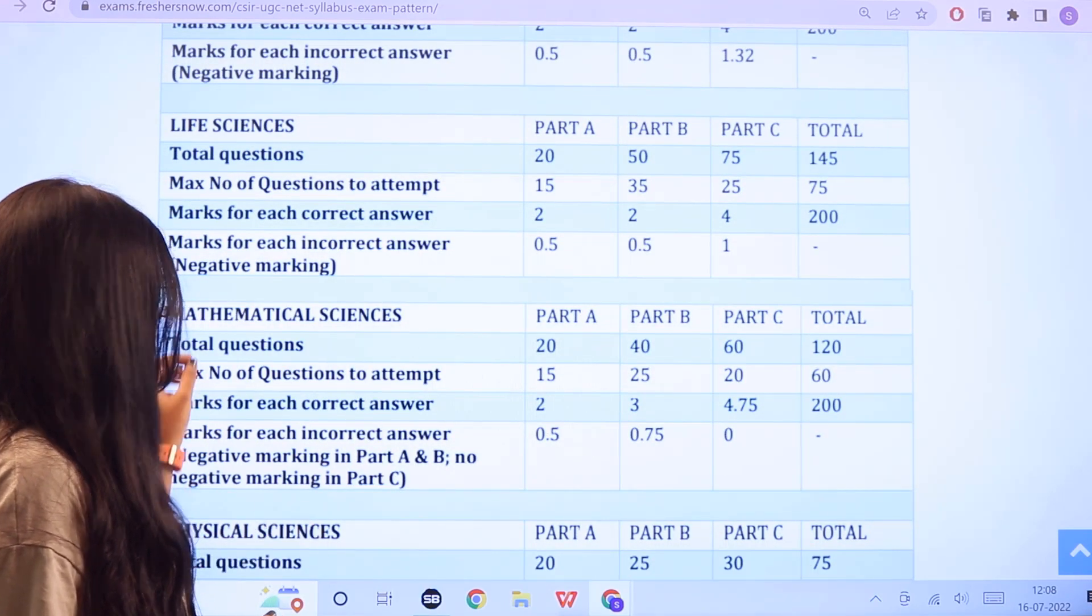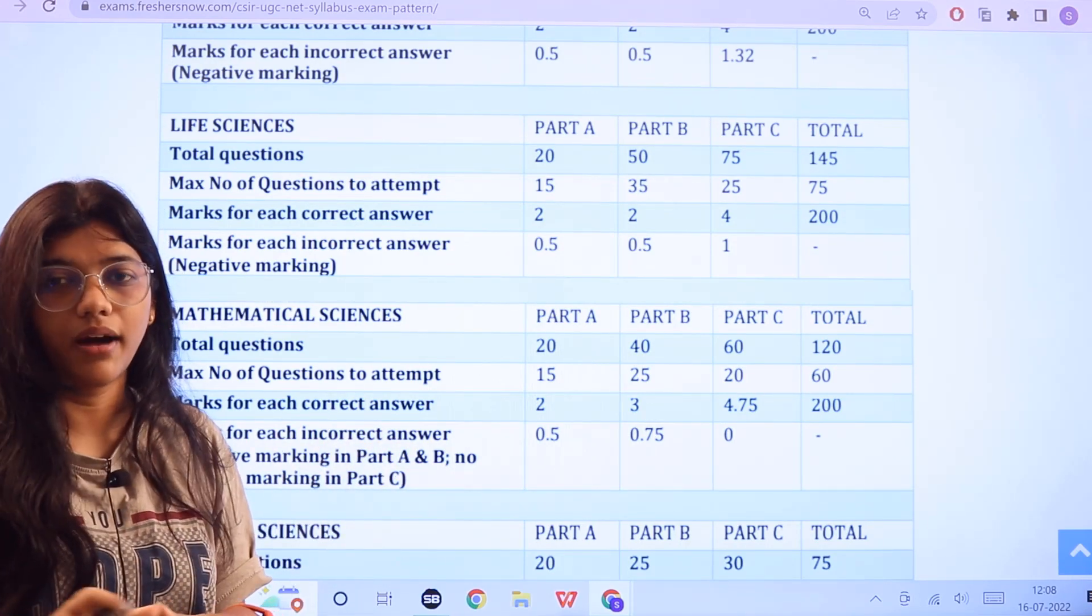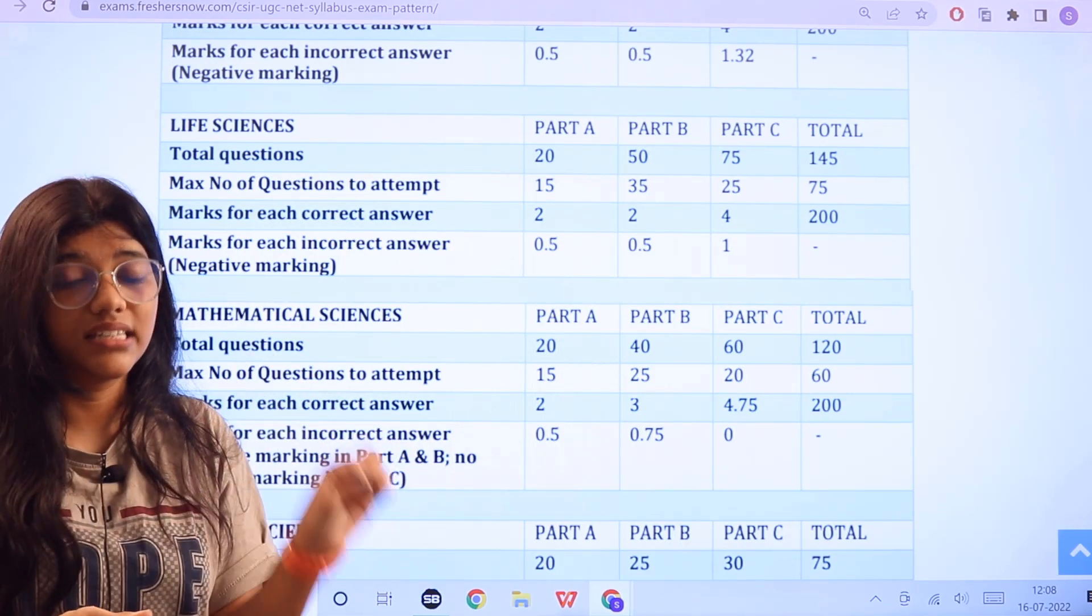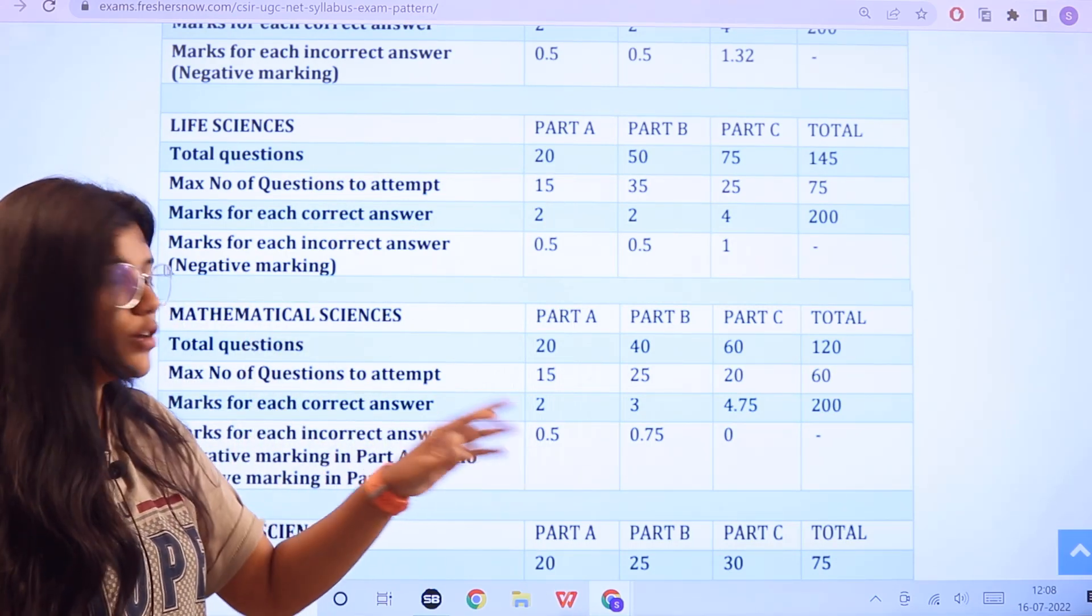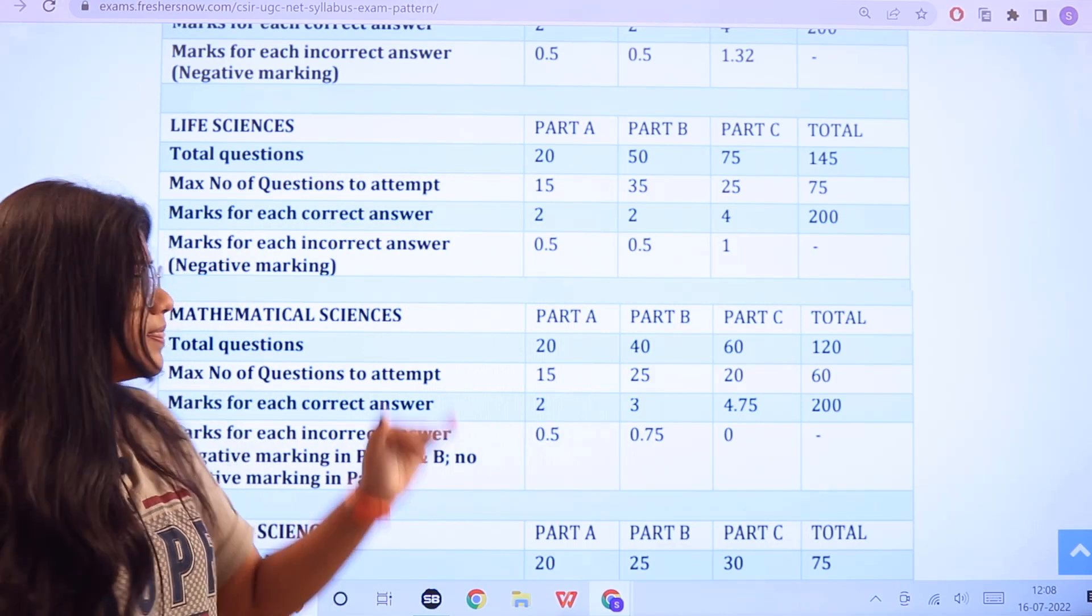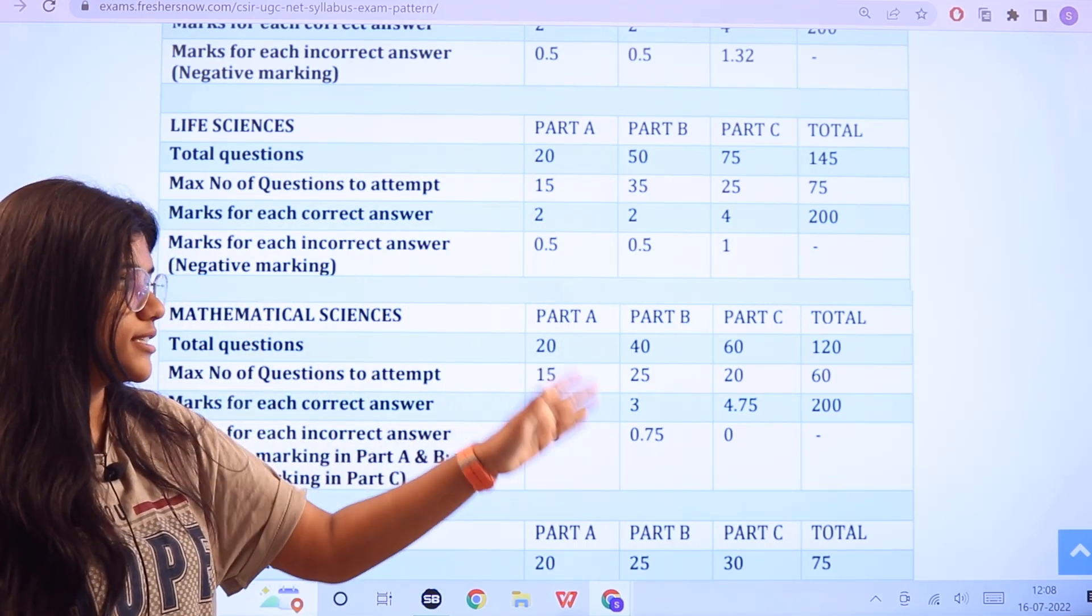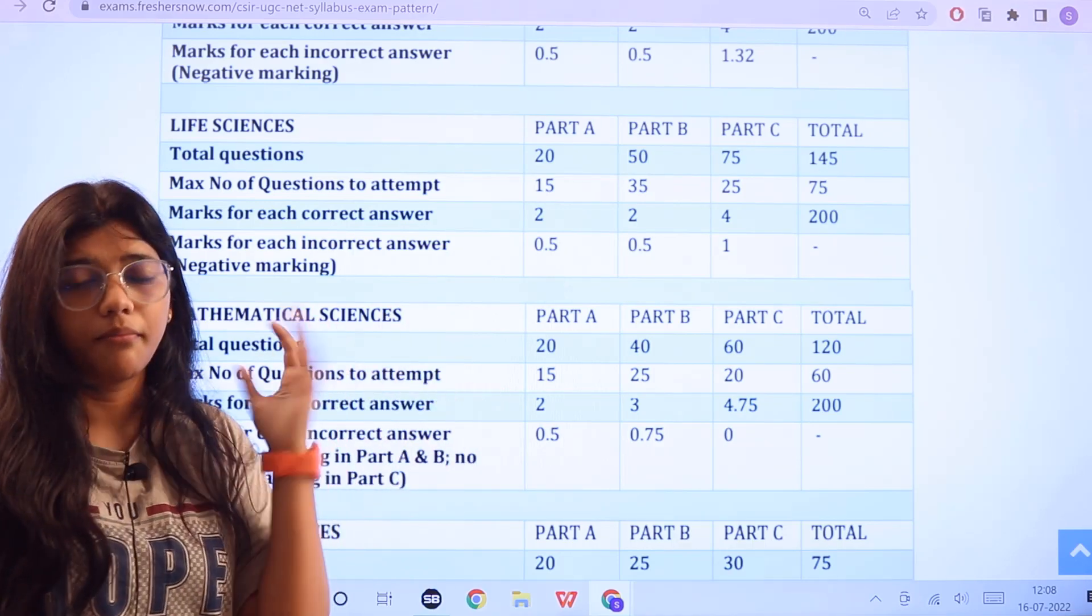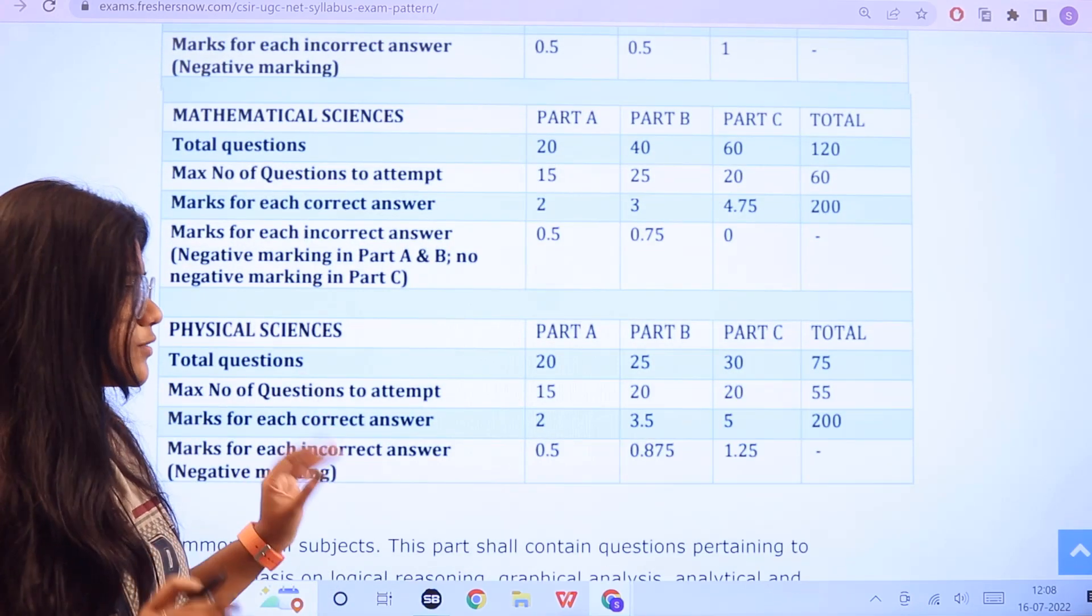Next, for mathematical sciences, again 120 questions, 200 marks. Here in part C you don't have any negative marking, but in part A and B you have 0.5 and 0.75. The total number of questions in part A are 20, part B 40, part C is 60. Maximum questions that you need to answer are 60. Marking criteria is for 200.